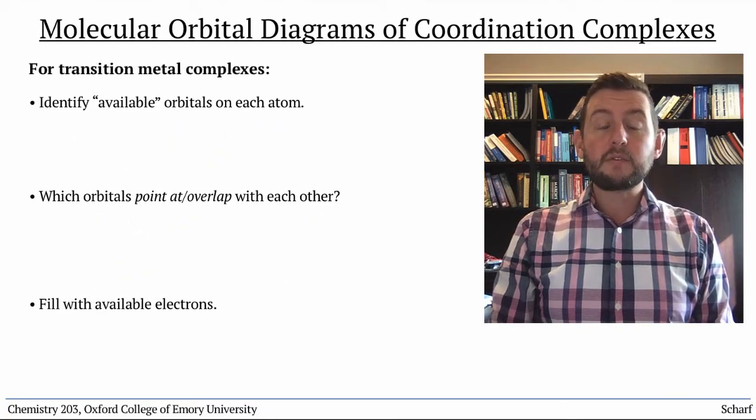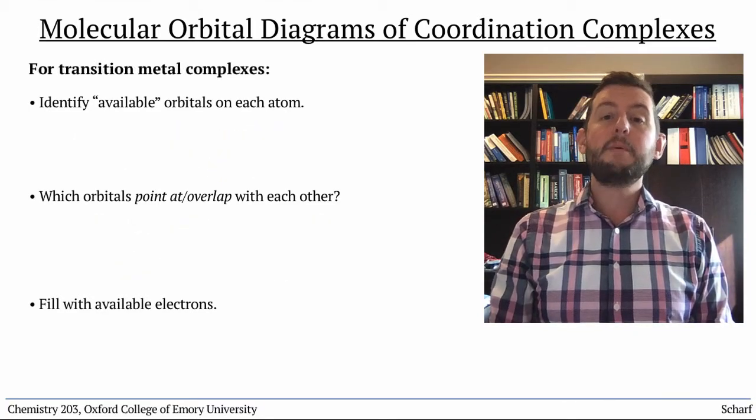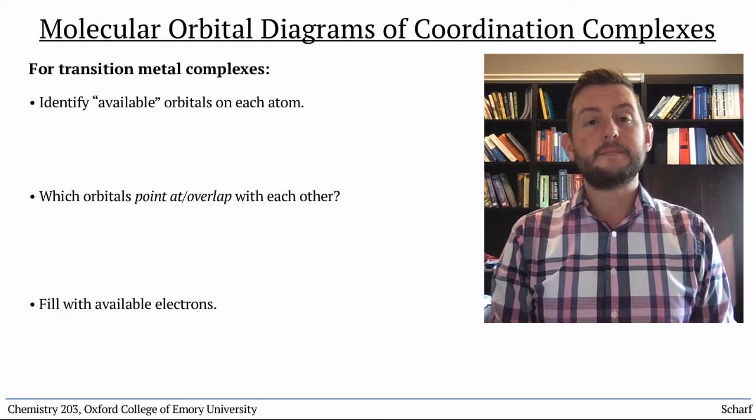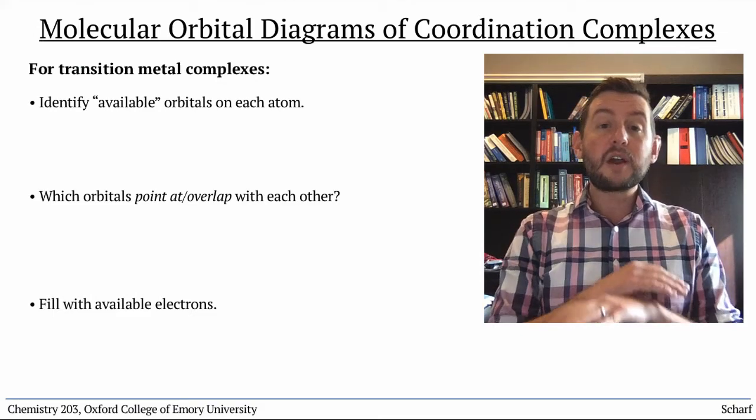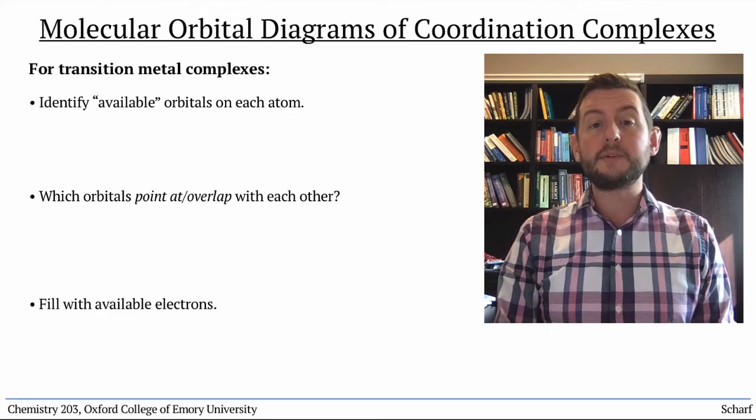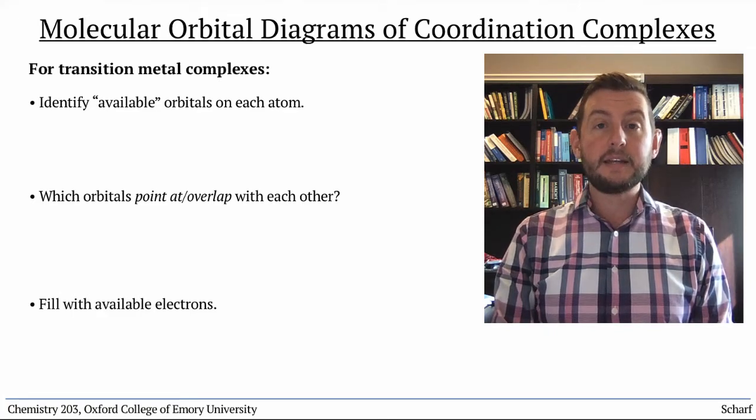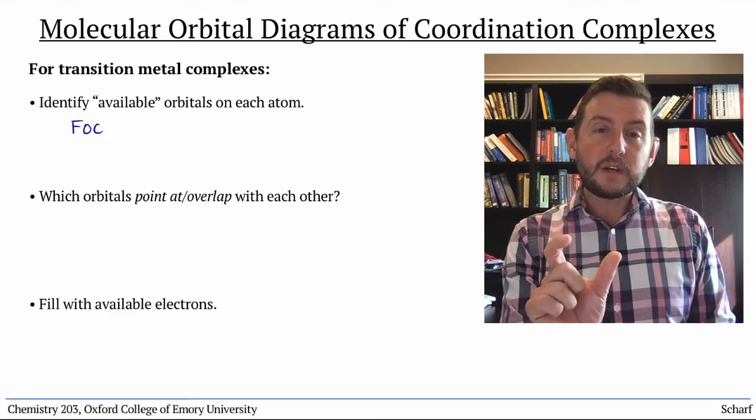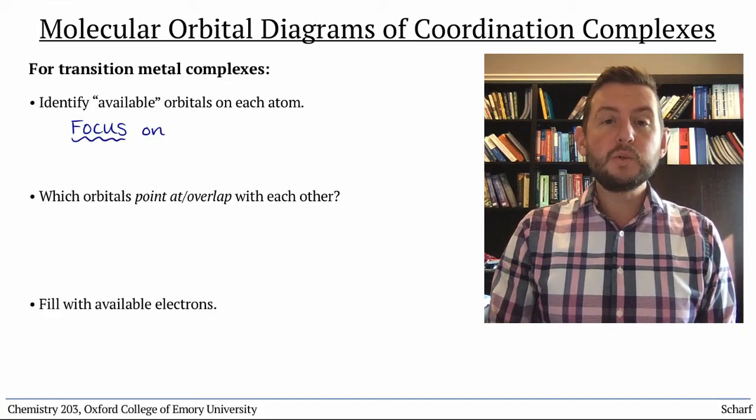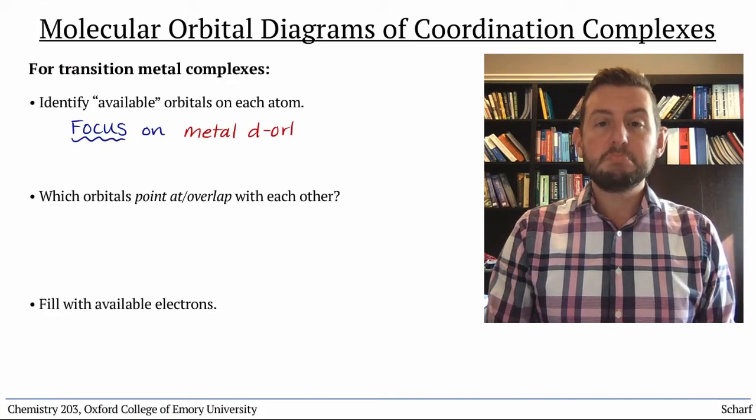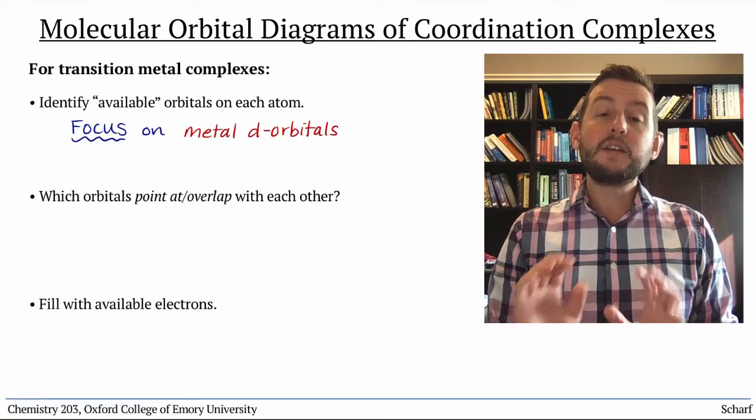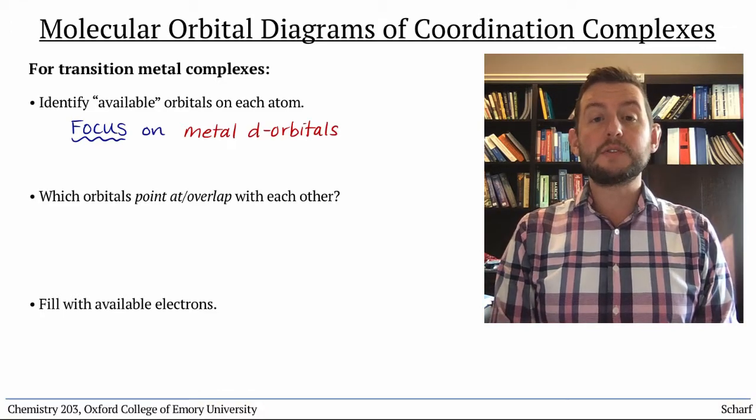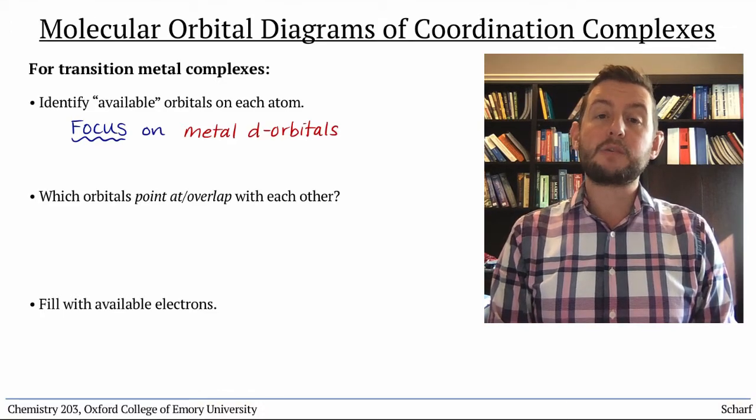We follow the same general approach with transition metals, but we have to make a few simplifications. Instead of considering all the available orbitals on the transition metal and the ligands, we focus on the transition metal's most important valence orbitals - the d orbitals - and only focus on the orbitals of the ligands that can interact with those d orbitals.